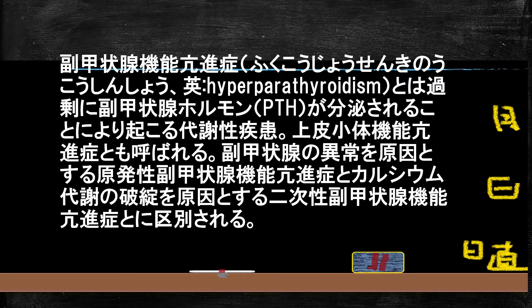今日のテーマは副甲状腺機能亢進症です。副甲状腺ホルモンが異常に分泌されることによって起こる代謝性疾患です。別名は上皮小体機能亢進症とも呼ばれます。副甲状腺の異常を原因とする原発性副甲状腺機能亢進症と、カルシウムの代謝の破綻を原因とする二次性の副甲状腺機能亢進症とに分けられます。